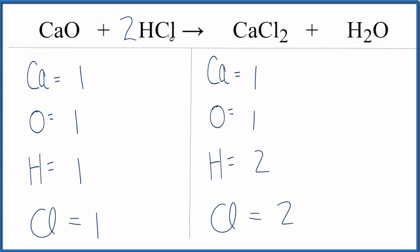So we have chlorines, one chlorine times two, that gives us two chlorines, they're balanced. Hydrogens one times two, that gives us two hydrogens, and those are balanced.